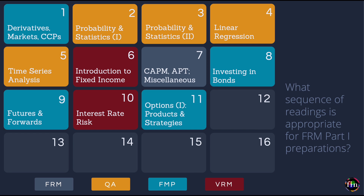In Lesson 11 our focus is options — four chapters from the FMP book. We go through the mechanics of options markets, properties of stock options including lower and upper bounds, early exercise of American options, and put-call parity. We then look at trading strategies involving options — bull spreads, bear spreads, butterfly spreads, straddles, strangles, etc. — and a dedicated chapter on exotic options.